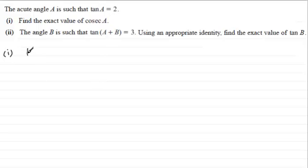So, if I know that tan of the angle A equals 2, cosec A is the same as 1 over sin A. So, cosec A is going to be 1 over sin A. The problem is we don't have sin A.